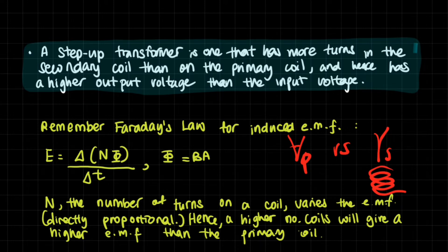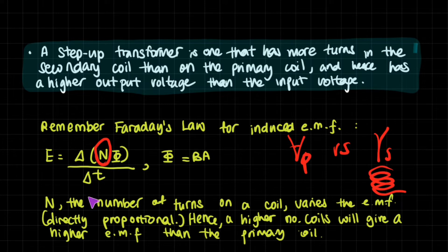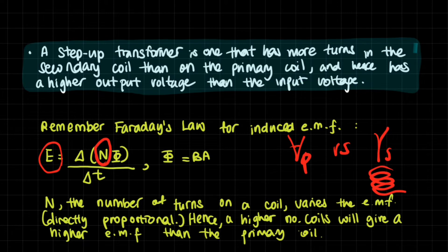The induced EMF is actually affected by the number of turns on the coil, so if we change this we can change the electromotive force. A step-up transformer is one that has more turns in the secondary coil than on the primary coil, and hence has a higher output voltage than the input voltage.